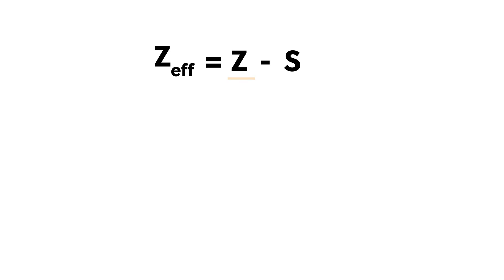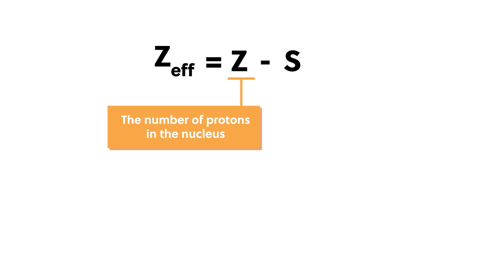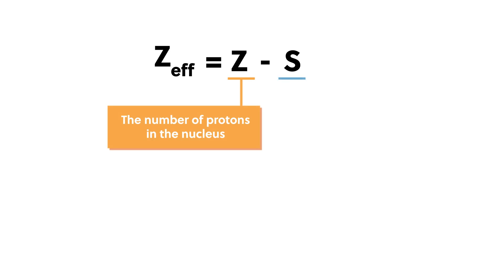The value of Z, the actual nuclear charge, is the number of protons in the nucleus. The value of S is approximated based on the number of core electrons separating the outer or valence electrons from the nucleus. However, more precise calculations of S require information about the shapes of the valence electron orbitals and the repulsive forces between valence electrons.